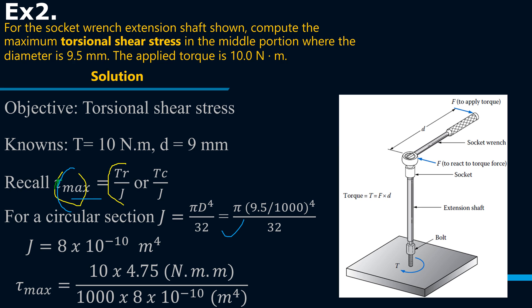Therefore J, we find J at 8 times 10 to the minus 10 meters to the power 4. If you substitute in the formula for the torsional shear stress, then we find the torsional shear stress as 59.38 MPa. Please note the dimensional analysis here, because this is Newton meter times meter divided by meter to the power 4. You can see how this comes to Newton per meter squared, which is essentially the units for stress.